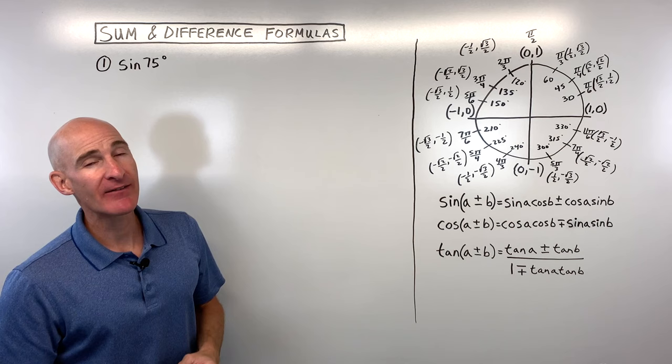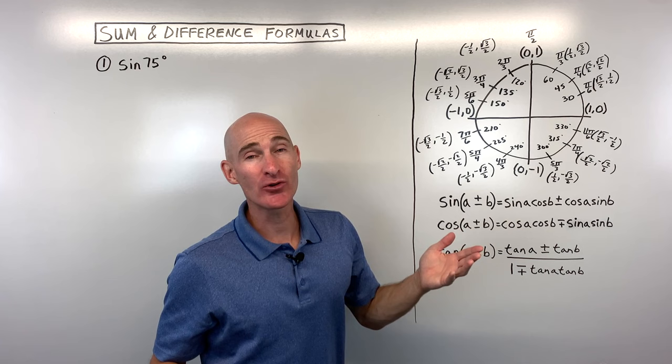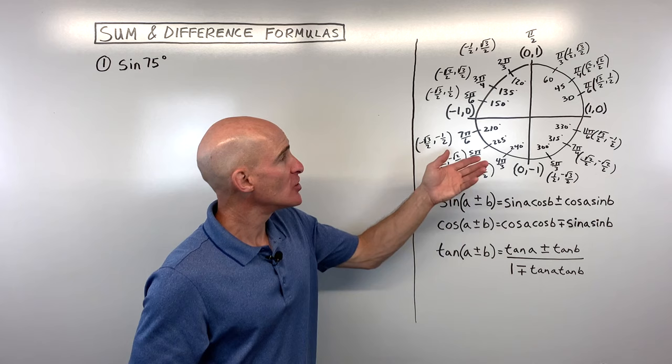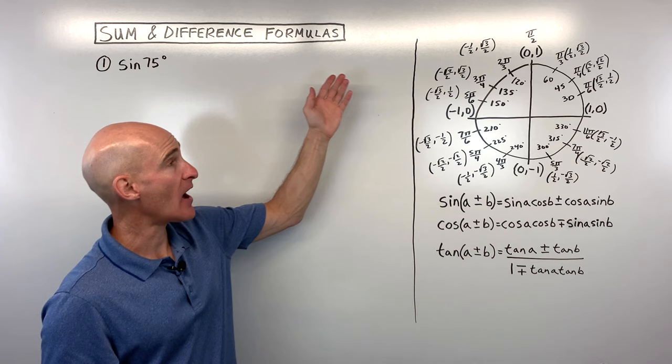The first thing we want to do is find the sine of 75 degrees. When we go to our unit circle, 75 degrees is not on it. So that's where these formulas come into play — they're called sum and difference formulas. You can add or subtract two angles that you're familiar with on the unit circle to find the sine of an angle you're not familiar with. So what two angles add or subtract to 75 degrees? We could do 45 plus 30 degrees.